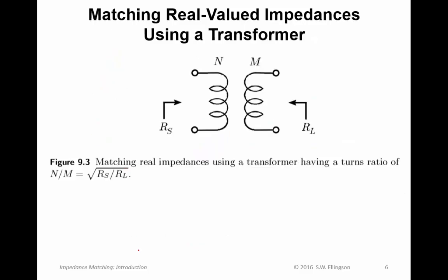So typically we don't see this done very often. From time to time we see it done, and it's an important technique to know about because it's intermittently useful. But it is not a very common thing to do. We can use transformers to match real valued impedances. The idea is this: the ratio of impedances at a transformer, if the input impedances are R_S and R_L, is given by the ratio of number of turns in the coil. So if we have N turns in this coil and M turns in this coil, then N over M is equal to the square root of the ratio of the impedances.